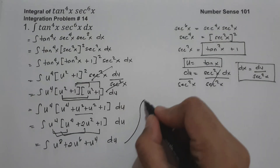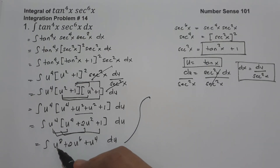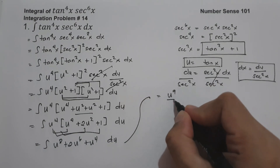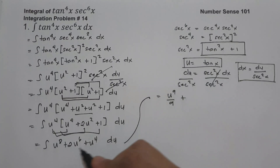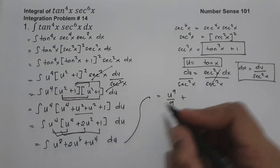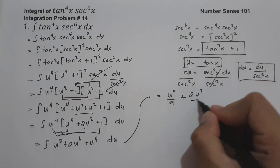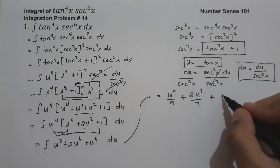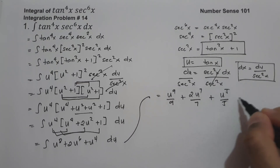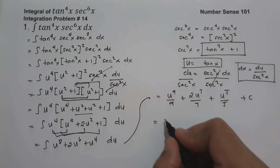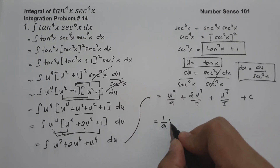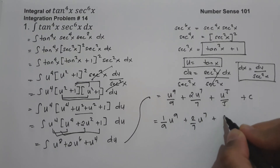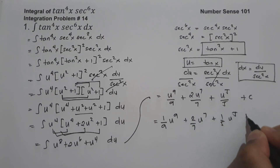Integrating each term: the antiderivative of u⁸ is u⁹/9, the antiderivative of 2u⁶ is 2u⁷/7, and the antiderivative of u⁴ is u⁵/5, plus C. This can be written as (1/9)u⁹ + (2/7)u⁷ + (1/5)u⁵ + C.